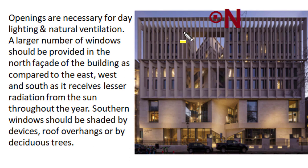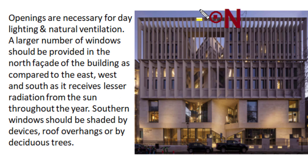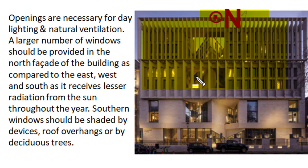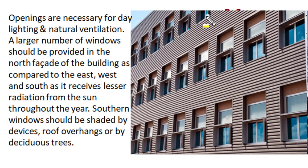We must provide appropriate shading arrangements using physical structures, tall trees, or shrubs to both east and west facades, as well as the south facade. In building envelope design, fenestration or openings are necessary for daylighting and natural ventilation. A good building orientation should provide a large number of windows and openings on the north façade of the building, as the north façade receives lesser radiation from the sun throughout the year — both in summer and winter — with no direct exposure of sunlight inside the building.